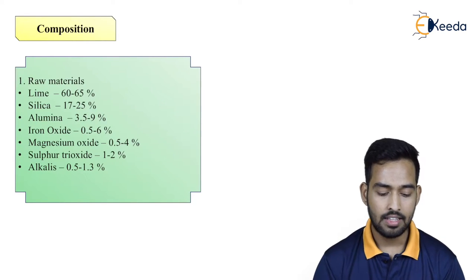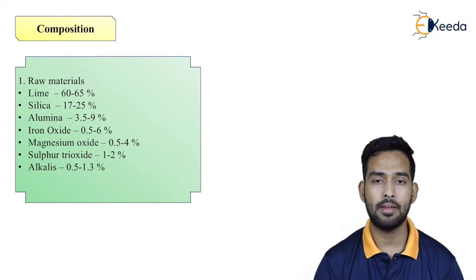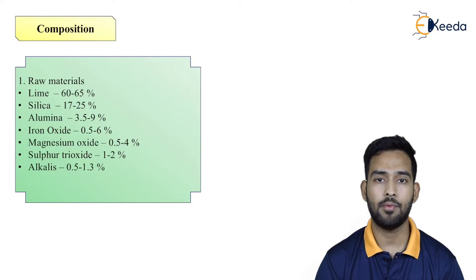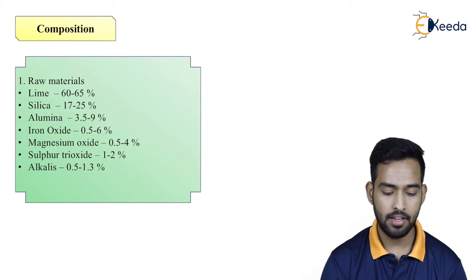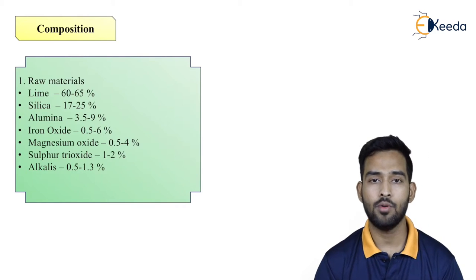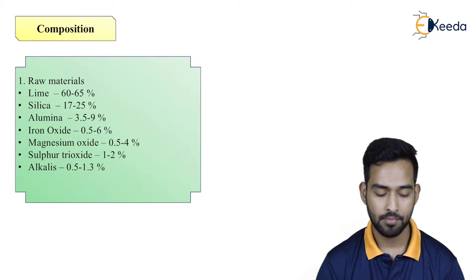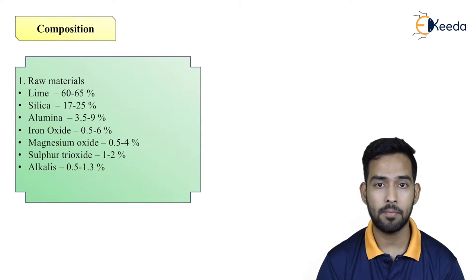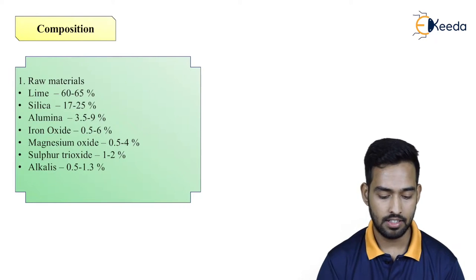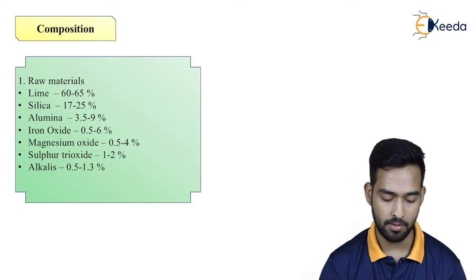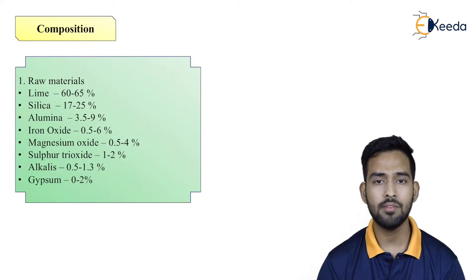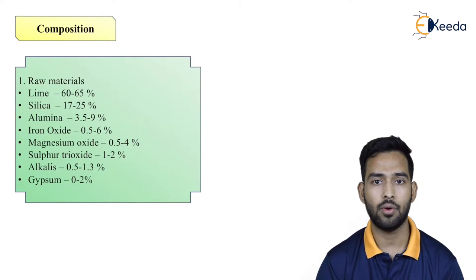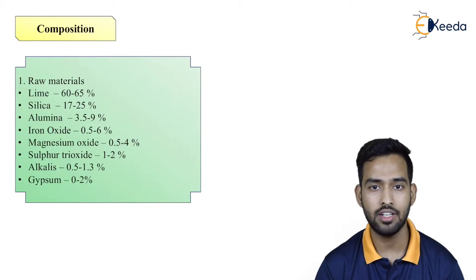Lime, silica, and alumina play a very important role in the manufacturing of cement and these are the main components. Lime takes already 60–65%, silica 17–25%. And gypsum might be present in the amount of 0.2% only.